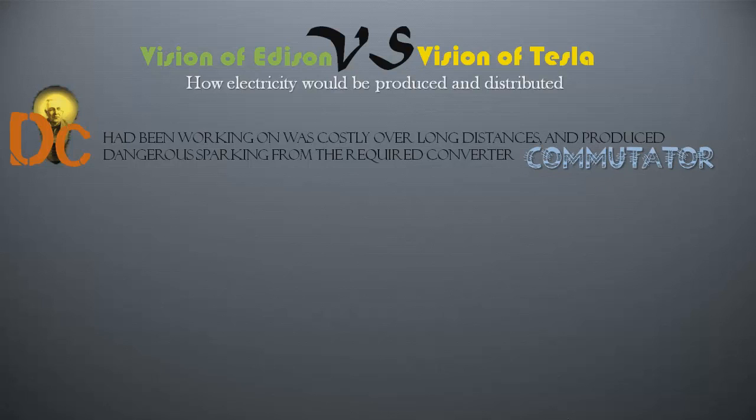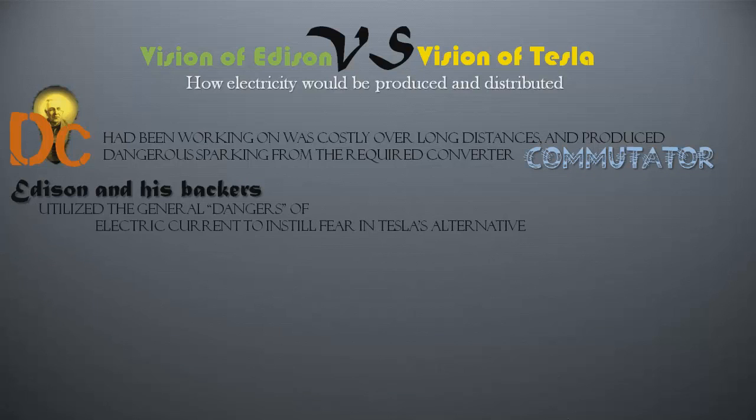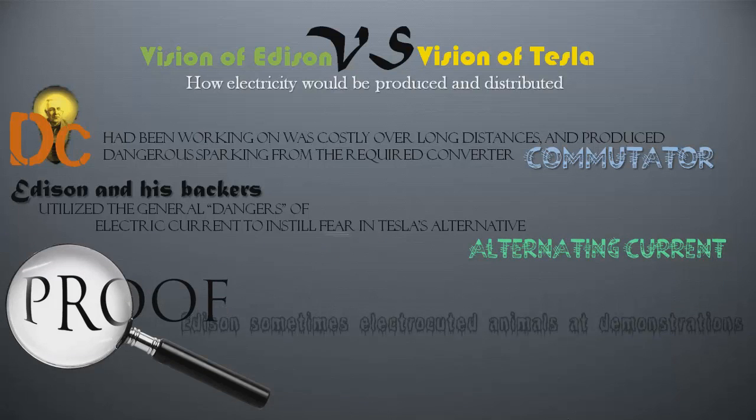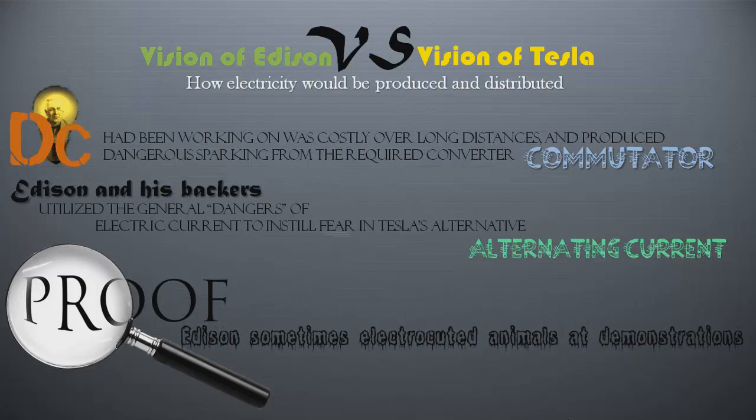Regardless, Edison and his backers utilized the general dangers of electric current to instill fear in Tesla's alternative, alternating current. As proof, Edison sometimes electrocuted animals at demonstrations.